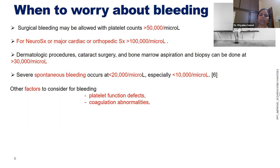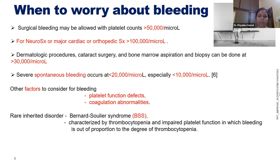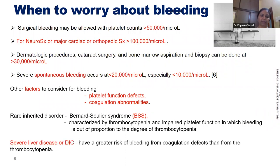Apart from counts, we must also look at platelet function defects and other coagulation abnormalities, as these contribute to bleeding. There are rare inherited disorders like Bernard-Soulier syndrome with both thrombocytopenia and impaired platelet function — a patient may have 60,000 platelets but still be bleeding. Similarly, in liver disease and DIC where coagulopathies coexist, the patient may bleed disproportionately compared to the total platelet count.